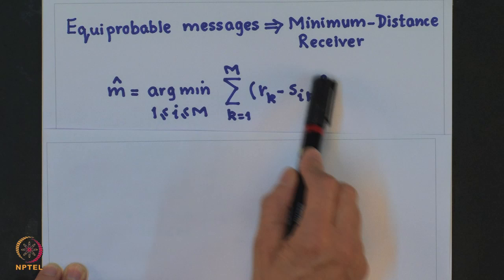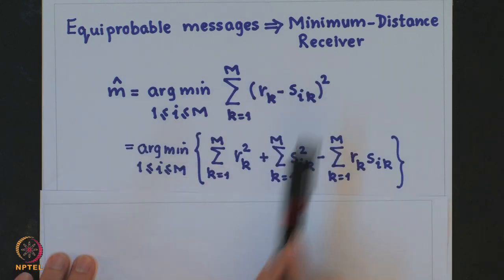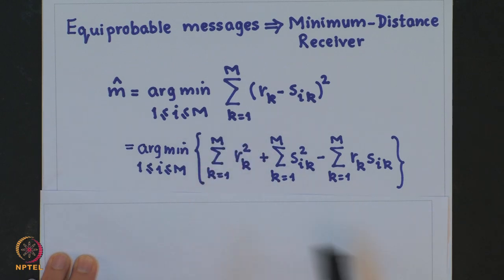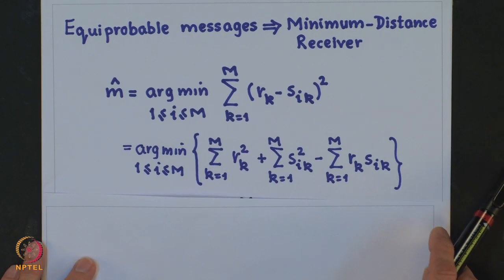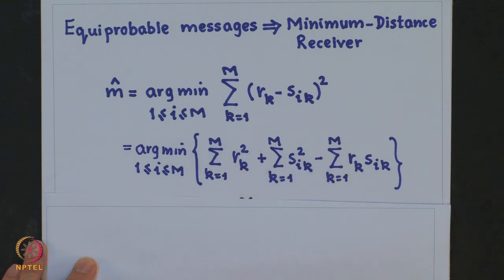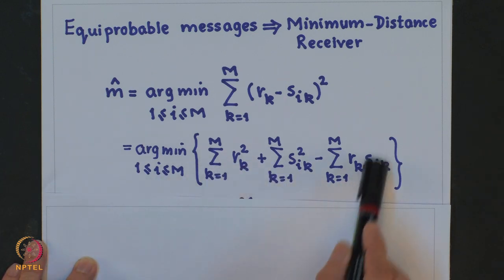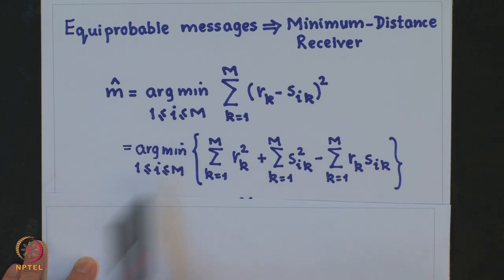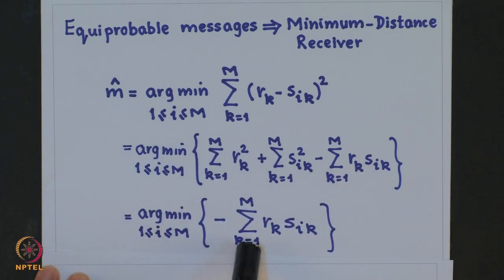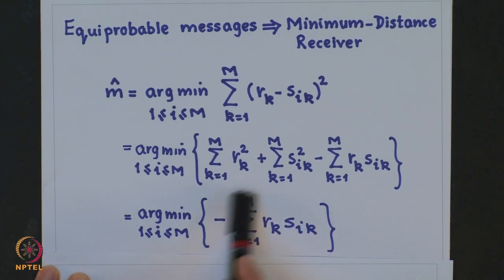If we expand this distance term, we get three sub-terms. The first — the energy in the projected received vector — is constant for all i. The second — the energy in signal S_i — is the same for all signals in the message set. So the only variable term when varying i is the cross term, and the decision rule reduces to minimizing the negative cross-correlation term.